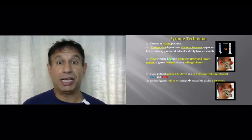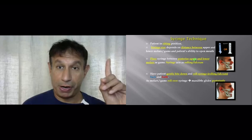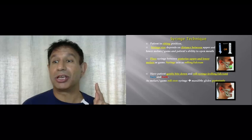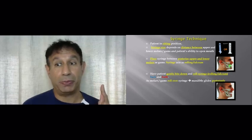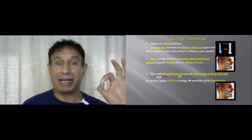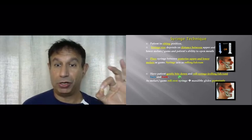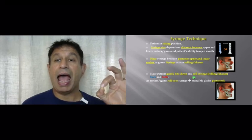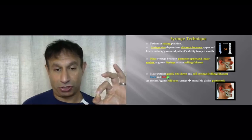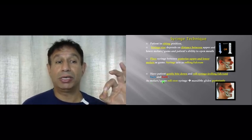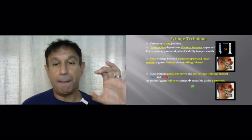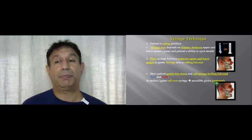The syringe is then placed between the upper and lower molar teeth. This syringe will act as your rolling fulcrum between the upper molar teeth and lower molar teeth. The patient gently bites down on the syringe between the molars and rolls the syringe back and forth. As the molars or the gums holding the syringe move the syringe back and forth, the mandible glides posteriorly.